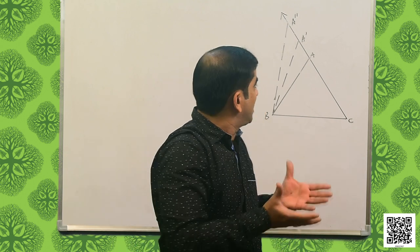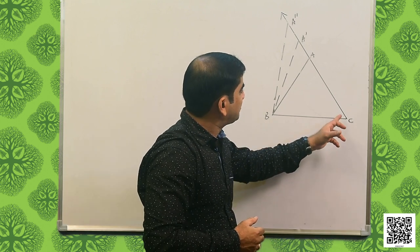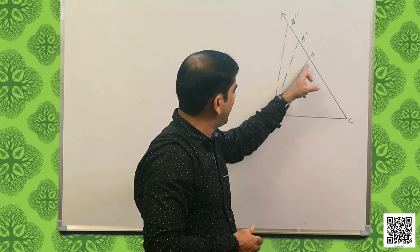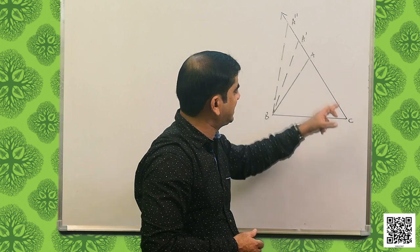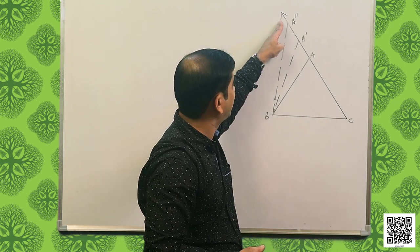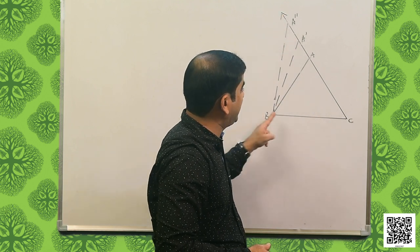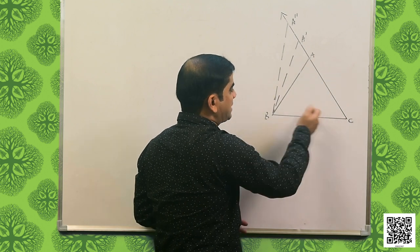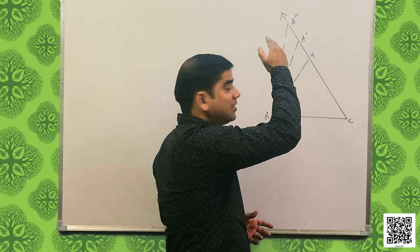From this we can find a pattern: whenever the length of the side increases, the angle at point B also increases. As AC increases to A dash C, angle ABC increases to angle A dash BC, and so on up to infinity. We have observed that as the length of side AC increased, the angle opposite to it — which is angle B — also increased.